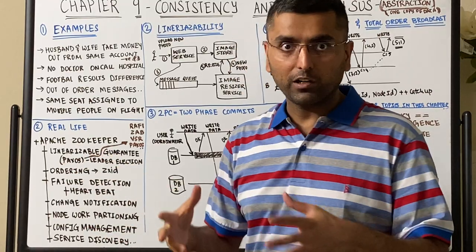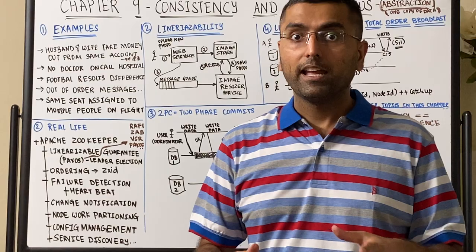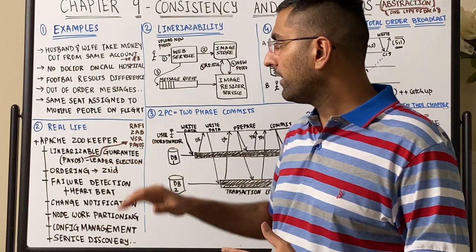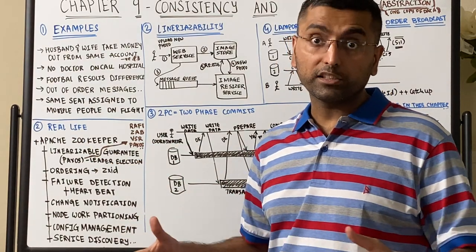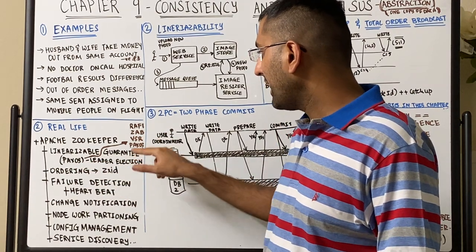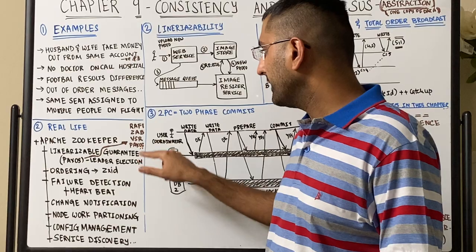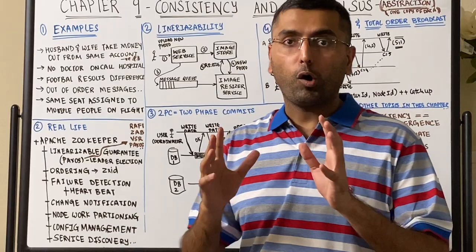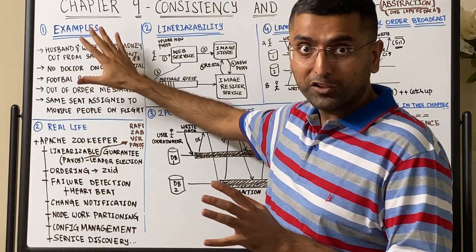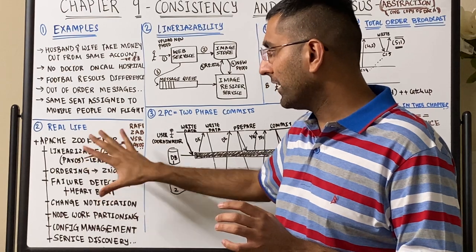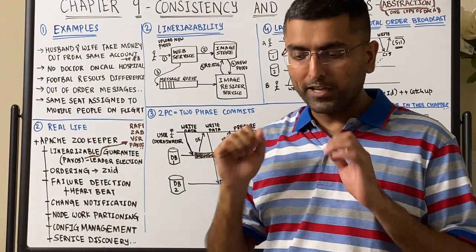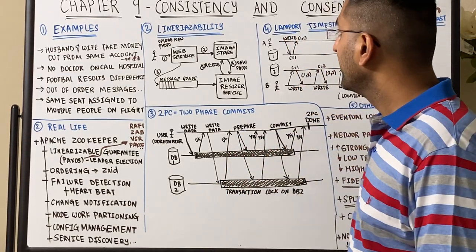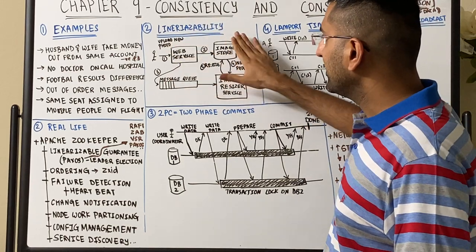ZooKeeper also enables configuration management, service discovery, heartbeat failure detection, partitioning — deciding what nodes should take what partitions of data — and various techniques for ordering and unique IDs like the ZXid. All of these examples need some sort of a coordinator, and Apache ZooKeeper is one example. These algorithms are very hard to get right, so you don't want to reinvent the wheel. You want battle-tested software like ZooKeeper — which uses Paxos, Raft, ZAB, or timestamp-based VSR — to handle distributed consensus problems reliably.